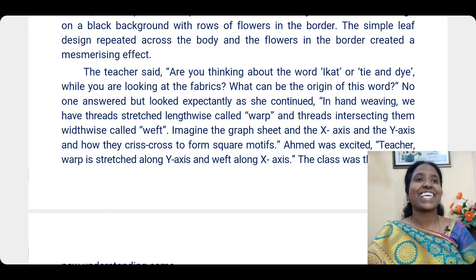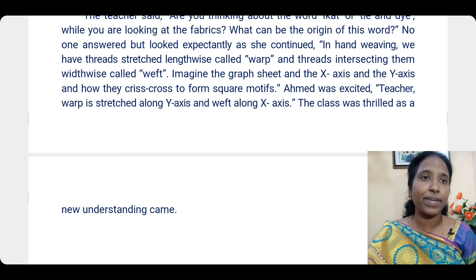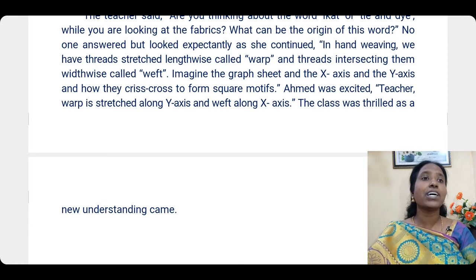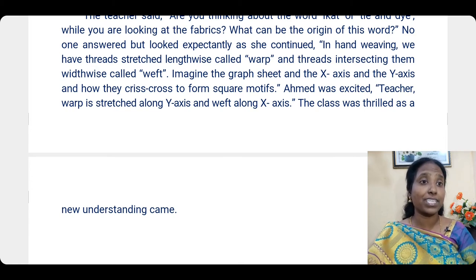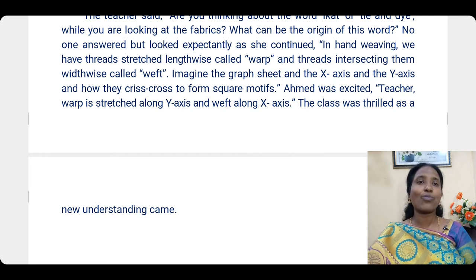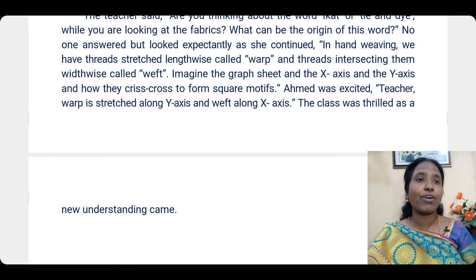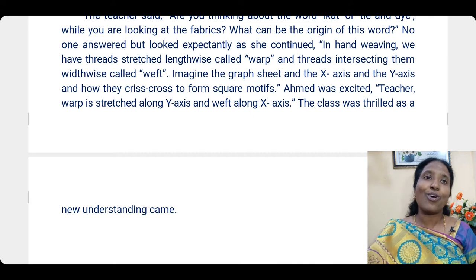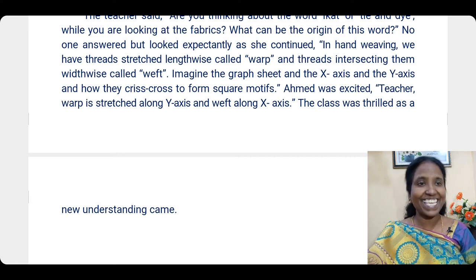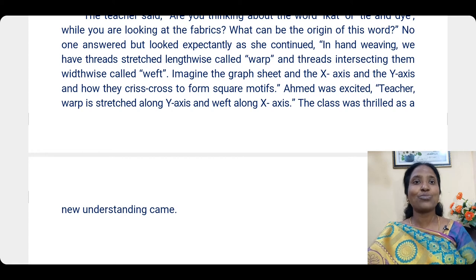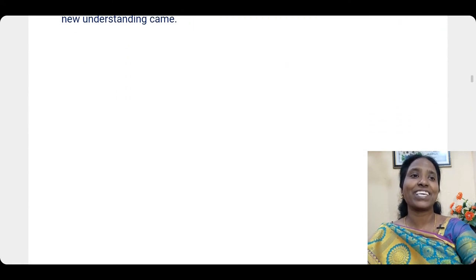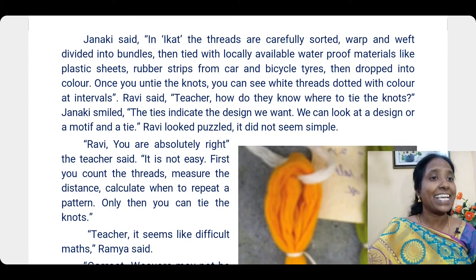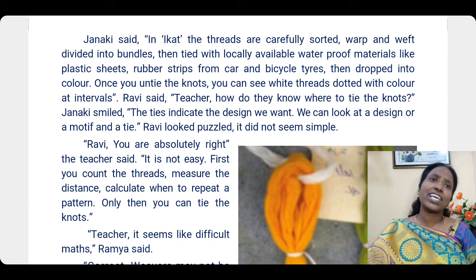Imagine a graph sheet — the x-axis and y-axis. The same way, warp and weft are there, and how they crisscross to form square motifs — just like the x-axis and y-axis in a graph sheet make small squares. Ahmed was excited: 'Teacher, warp is stretched along the y-axis and weft along the x-axis!' The class was thrilled as a new understanding dawned.